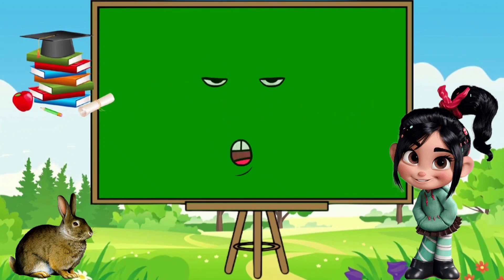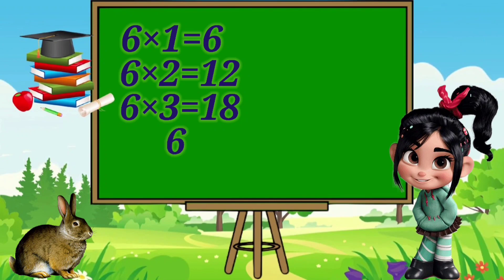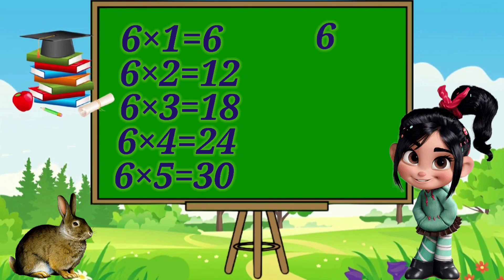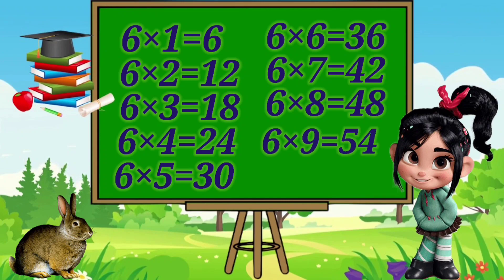Dear children, let's repeat once more. 6×1=6, 6×2=12, 6×3=18, 6×4=24, 6×5=30, 6×6=36, 6×7=42, 6×8=48, 6×9=54, 6×10=60